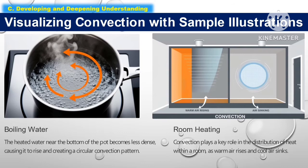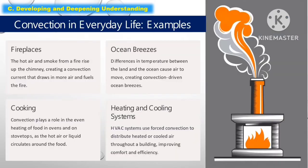The following are sample illustrations of convection. For the first picture, it shows boiling water — the heated water near the bottom of the pot becomes less dense, causing it to rise and creating a circular convection pattern. For the second picture, it shows room heating — convection plays a key role in the distribution of heat within a room, as warm air rises and cool air sinks.